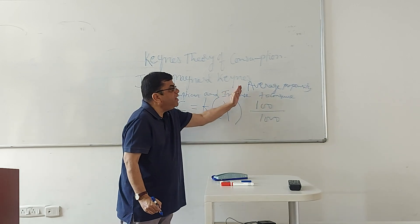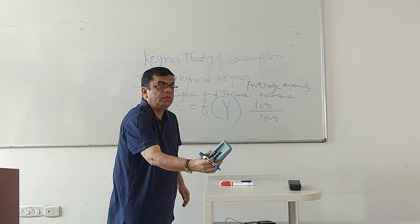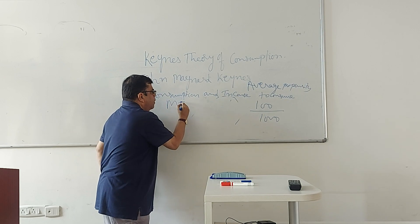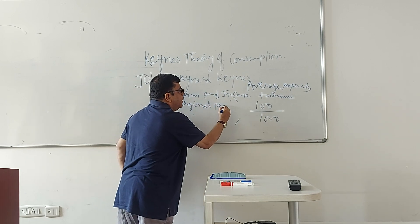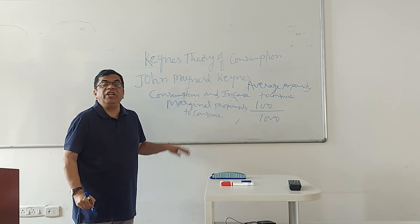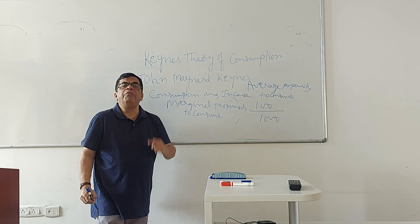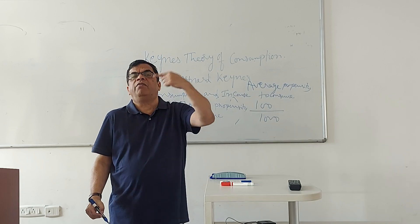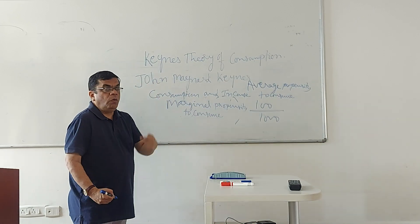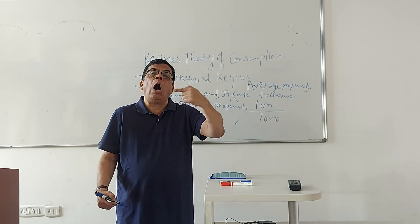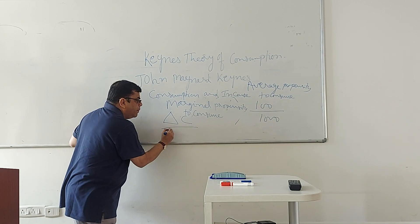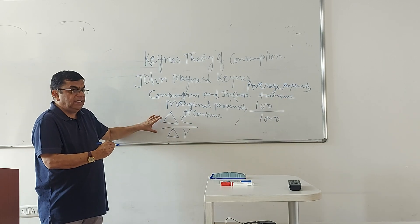Apart from Average Propensity to Consume, Keynes also talked about another concept — Marginal Propensity to Consume. Marginal Propensity to Consume is the change in consumption due to a change in income. If my income increases by one unit, by how much does my consumption change? It is expressed as delta C divided by delta Y, where delta denotes the change.